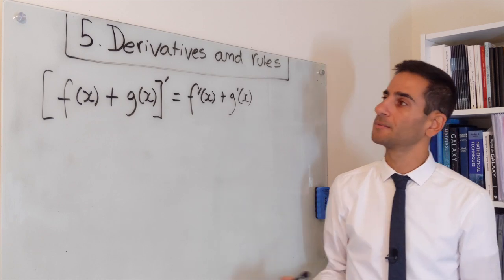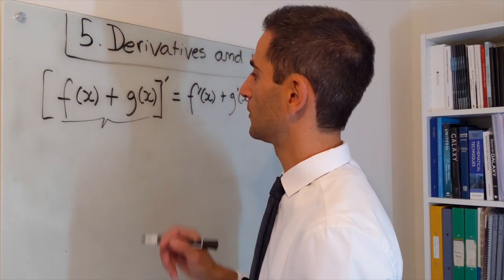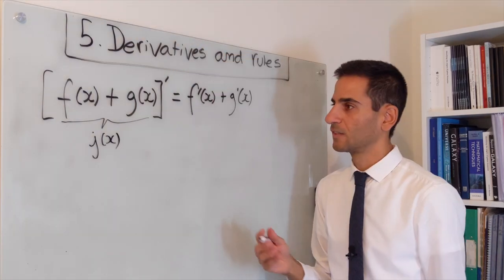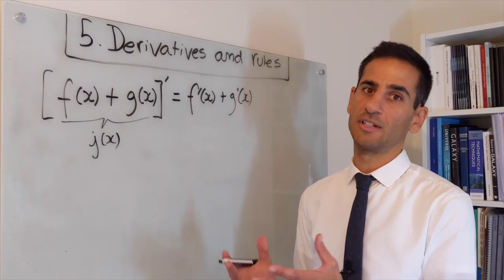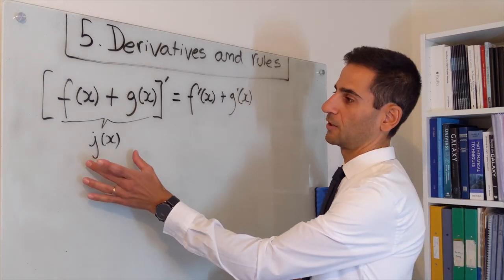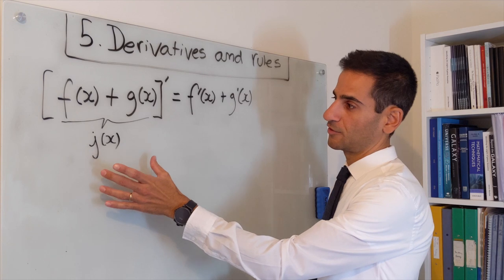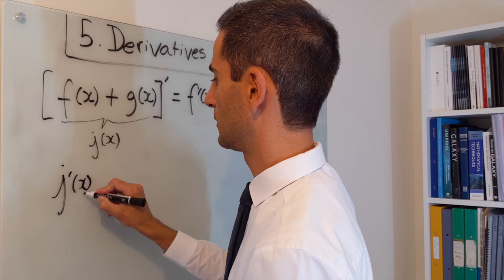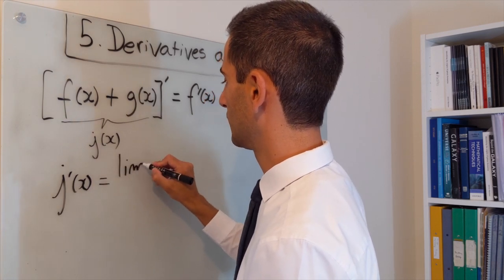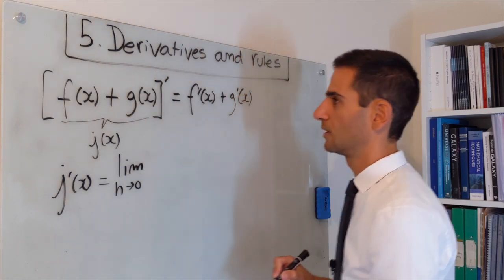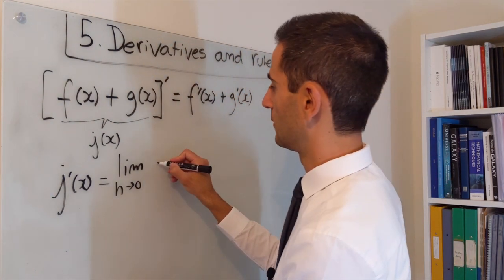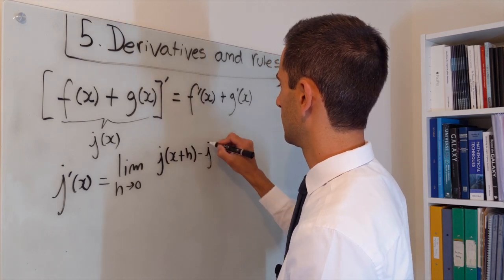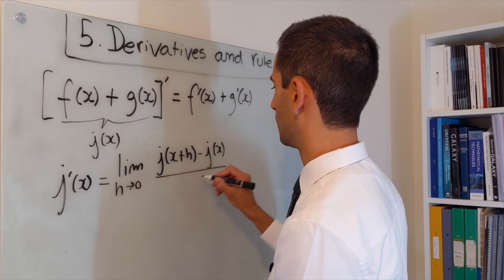To show that this is the case, let's call this function that you obtain by summing j. This is important so we can use differentiation from first principles and we're going to try to calculate the derivative of j. The derivative of j is equal to the limit when h goes to zero of j of x plus h minus j of x over h.